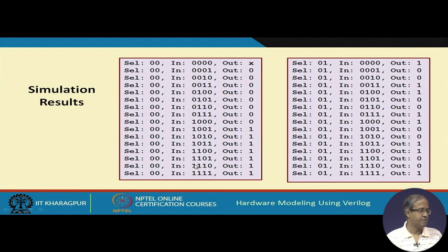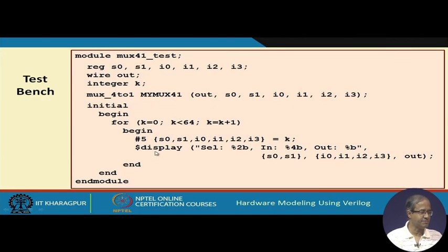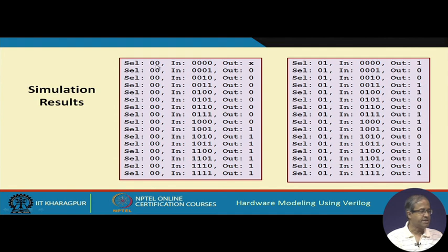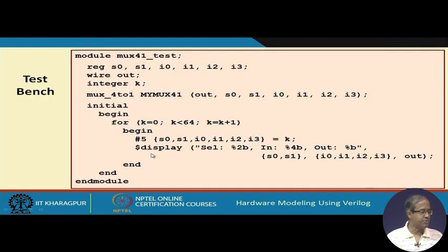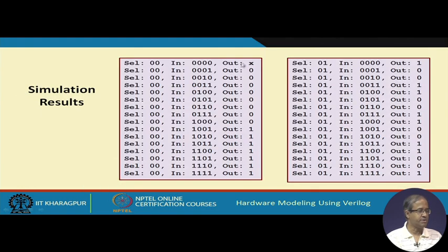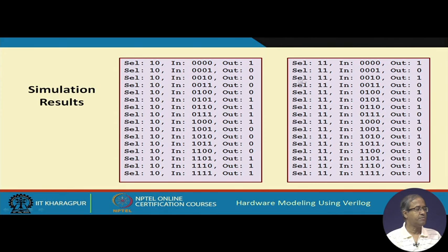You may ask why the first output comes as X. The reason is that a delay of 5 is applied before assigning the value of K, but the display statement has no delay — so it displays the previous value before the assignment is done. When select is 0 1, the second input is selected. Similarly for select 1 0 and 1 1, the corresponding inputs are correctly selected.